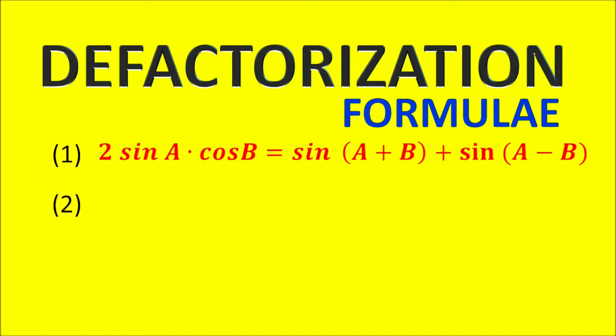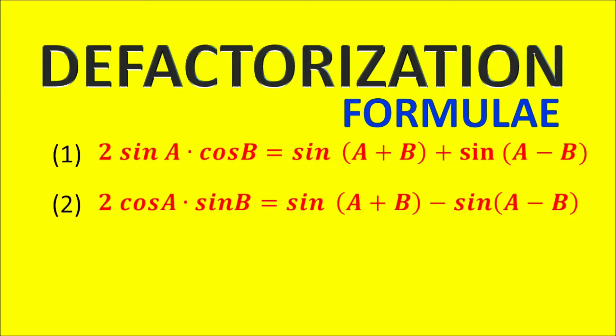Second Formula: 2 cos A into sin B is equal to sin(A plus B) minus sin(A minus B).